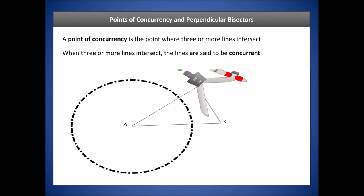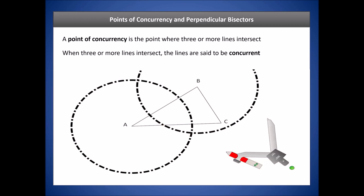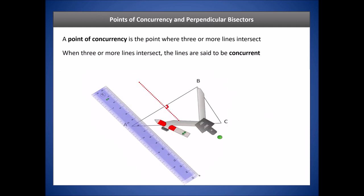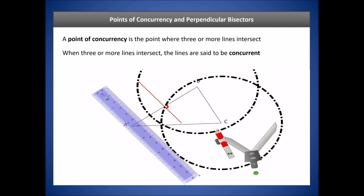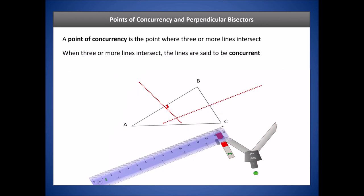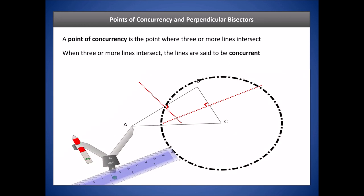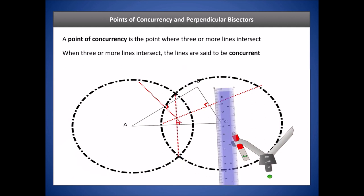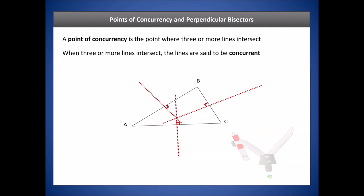We're going to construct perpendicular bisectors for a triangle. Starting at vertex A, we draw a circle, then at B we draw another circle with the same radius, and connect where those circles intersect. We repeat this for sides BC and CA. What we just constructed is a perpendicular bisector for each side. Trimming those off, we see that the three perpendicular bisectors meet at a single point of concurrency.